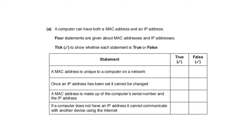A computer can have both a MAC address and an IP address. Four statements: A MAC address is unique to a computer on a network — true. Once an IP address has been set it cannot be changed — false, because we have static and dynamic IP addresses; a dynamic IP address changes every time you connect to a Wi-Fi router. A MAC address is made up of a computer's serial number and IP address — false. If a computer does not have an IP address it cannot communicate with other devices on the internet — true.